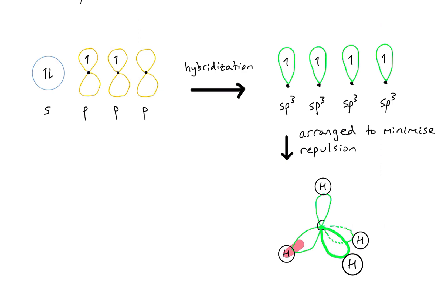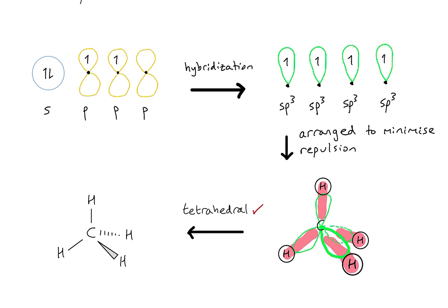Each hybrid orbital can form a nice sigma bond by overlapping along the bond axis with the hydrogen atoms. Going back to the original diagram of our methane molecule, we see a nice symmetrical tetrahedral shape. This process of hybridization helps explain why when we analyze methane we find a tetrahedral structure — something must have happened, and it's this process of hybridization.